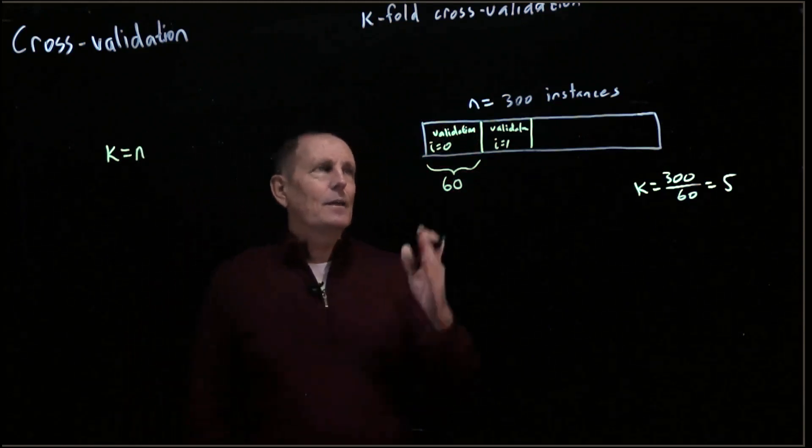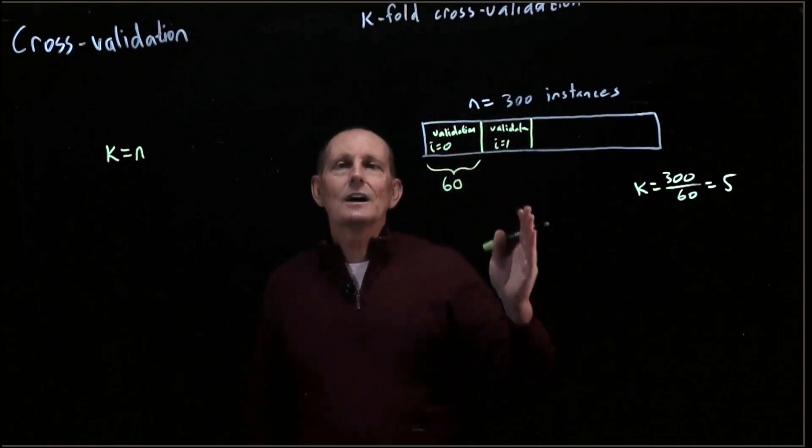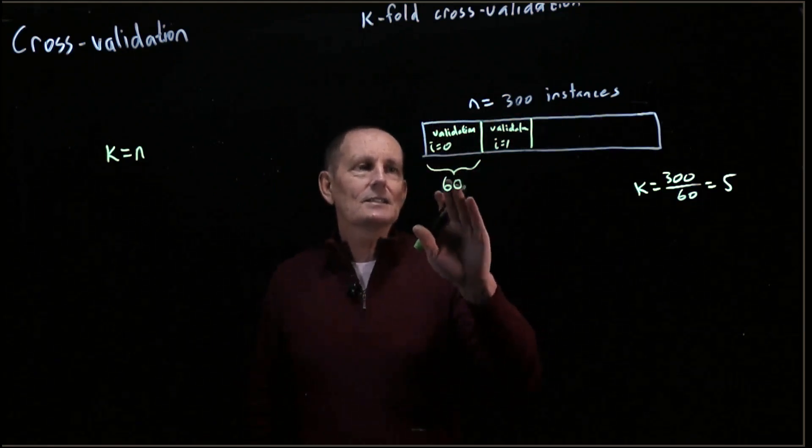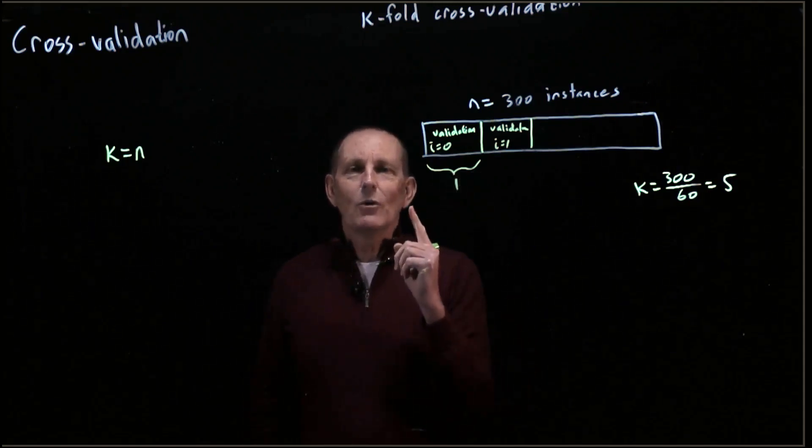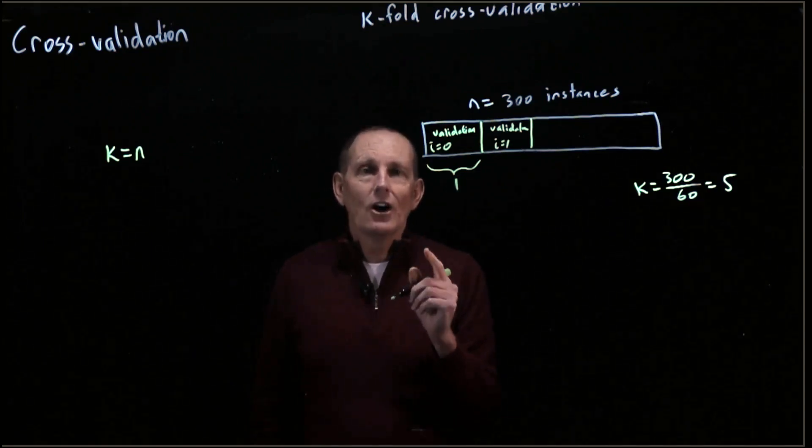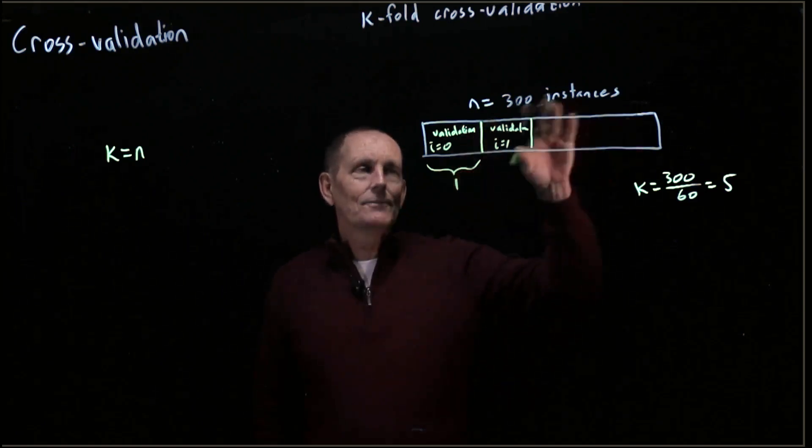So if k goes to n, that means if n is 300, we are going to train 300 times. And each time, this is not going to be 60, this is going to be one instance. We have one instance that we use as a validation, and then we train on all n minus 1 remaining instances.